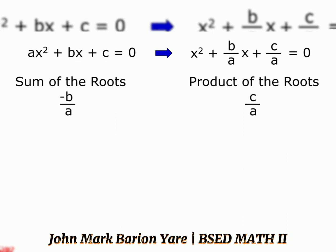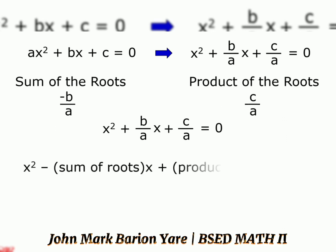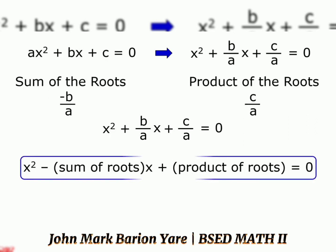The equation x squared plus b over a times x plus c over a equals 0 can be written as x squared minus the sum of roots times x plus the product of roots equals 0. We will use this concept in writing quadratic equations given the sum and product of the roots.